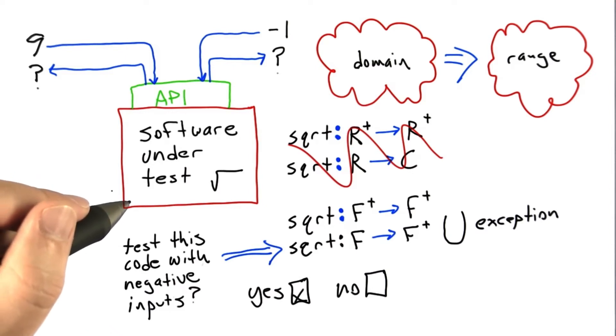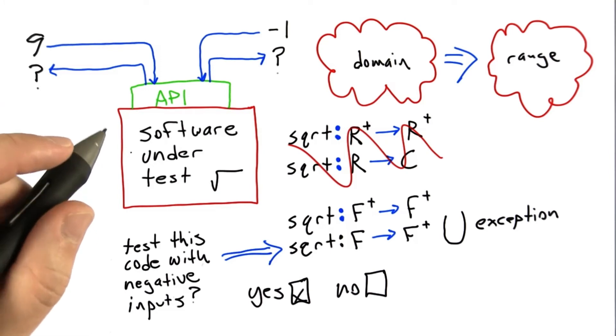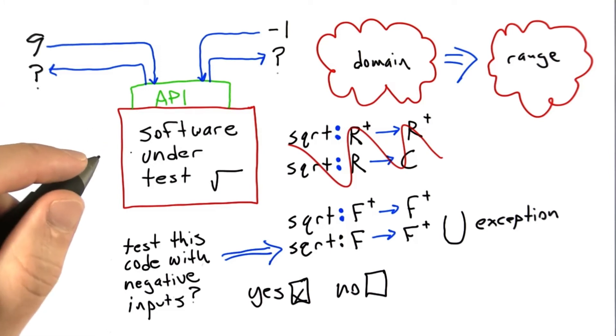And that's usually perfectly legitimate. As long as this kind of fact is documented, as long as it's clear to the users of the function, then restrictions on the domain of functions are actually a very valuable tool in practice.